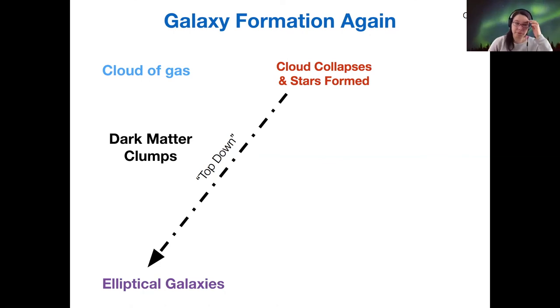immediately. There's a different process which your book calls bottom-down. So that's the process by which we first form smaller galaxy fragments. And then those galaxy fragments merge together to become elliptical galaxies.